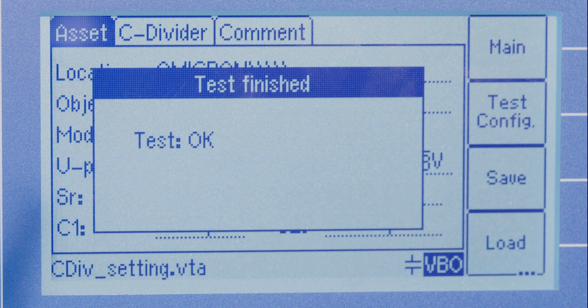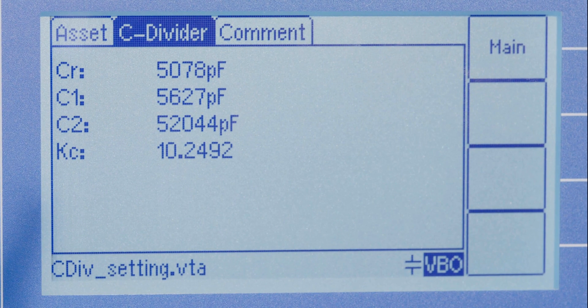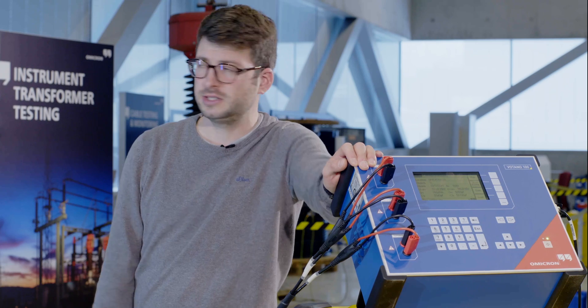From both measurements, you can determine the capacitance C1, C2, the total capacitance CR, and the capacitive ratio of the CVT.